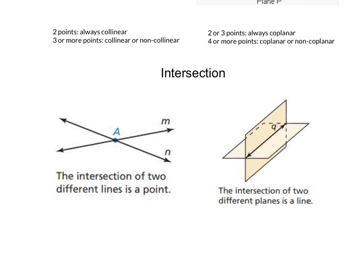How about two planes intersect? The intersection of two different planes is a line. Here, this line Q is on both planes, and it is the intersection of these two planes.